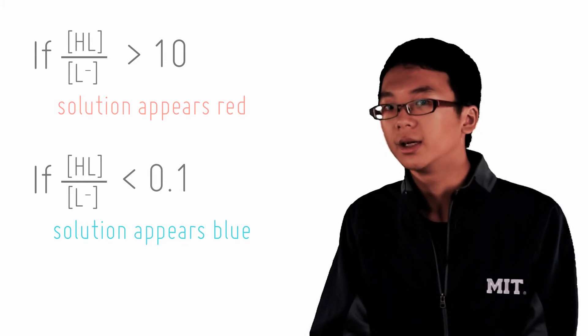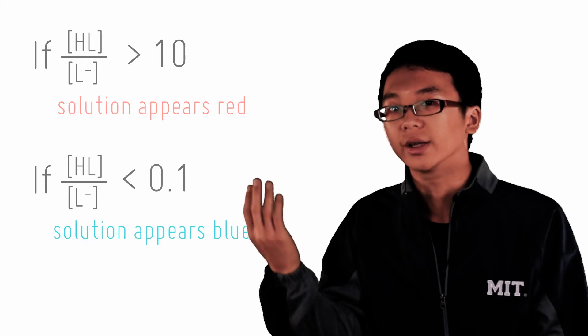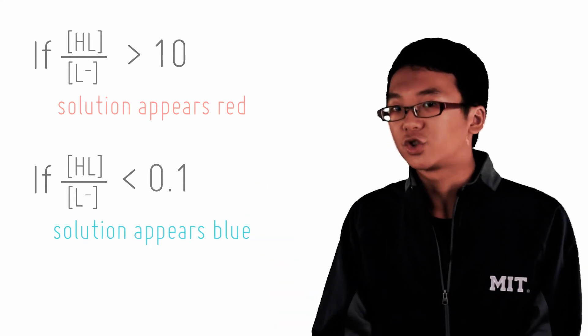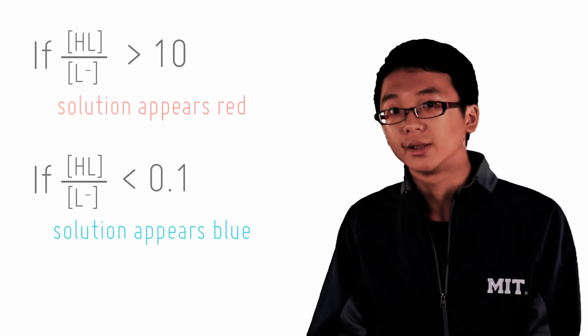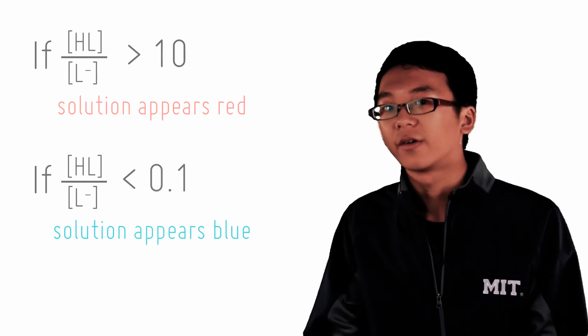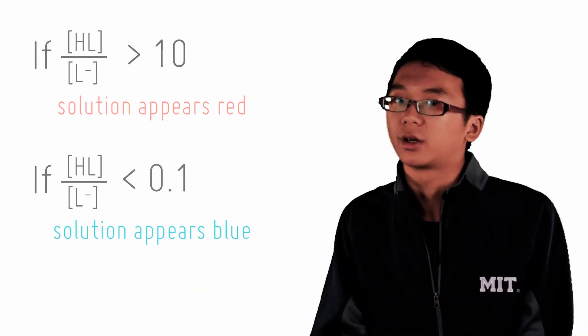So for litmus, if HL over L- is larger than 10, the solution appears red because the undissociated acid form is red. If HL over L- is smaller than 0.1, then the solution appears blue. You can of course calculate the pH at which these two occur using the equilibrium expressions.